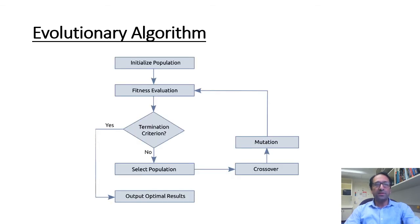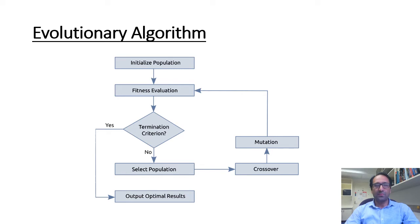Evolutionary algorithms use a population of individuals, where an individual is referred to as a chromosome. For each generation, individuals compete to reproduce offspring. Those individuals with the best survival capabilities have the best chance to reproduce. Offspring are generated by combining parts of the parents, a process referred to as crossover. Each individual in the population can also undergo mutation, which alters the chromosome. The survival strength of an individual is measured using a fitness function, which reflects the objective and constraints of the problem to be solved.